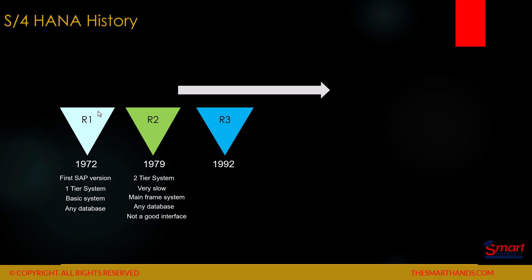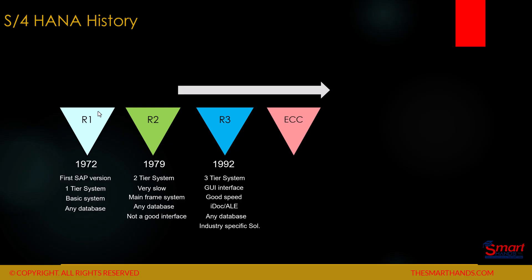Then they launched R3 in 1992, which was better than the previous versions. It was a three-tier system with a GUI interface, good speed, and they also launched IDOC and ALE. It could run on any database and offered industry-specific solutions. Then they launched ECC in 2004, also a three-tier system. With ECC they also launched additional modules such as CRM, SRM, APO, and a web-based interface called NetWeaver.